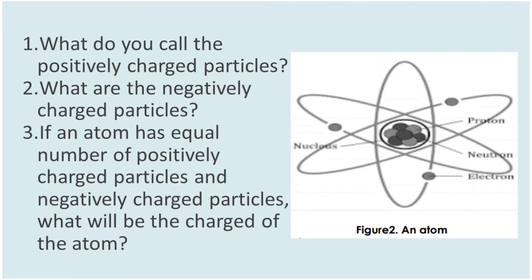An atom is electrically neutral because they have an equal number of protons and electrons. When do we say that an object is positively charged or negatively charged?